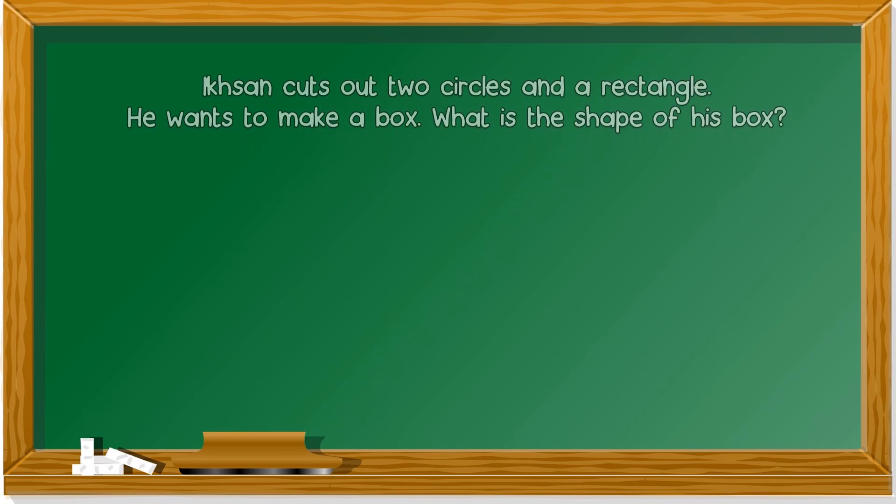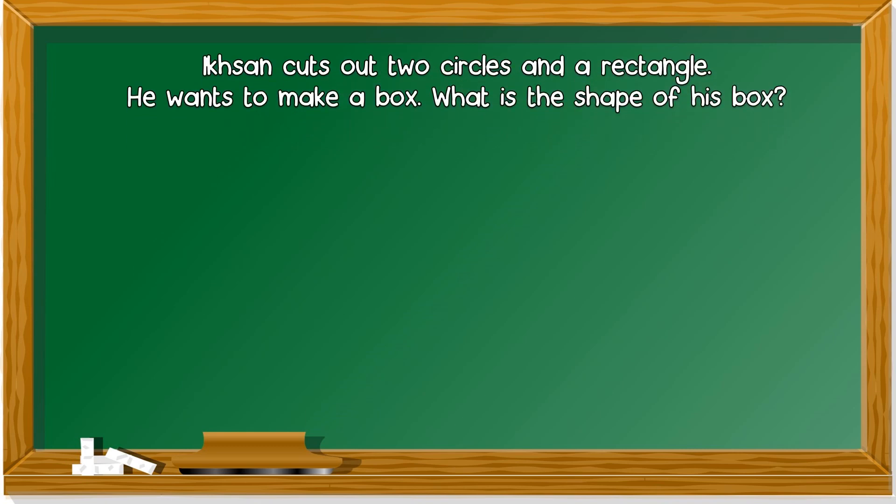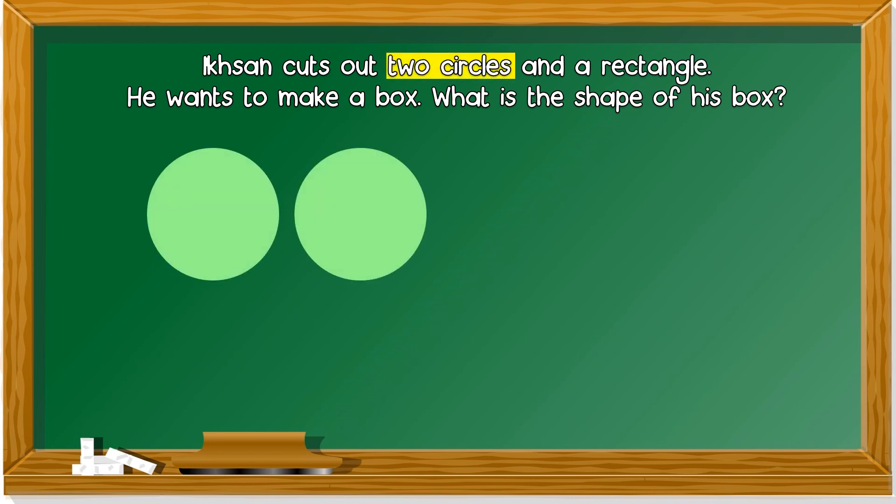Next question. Iksan cuts out 2 circles and a rectangle. He wants to make a box. What is the 3D shape? What is the shape of his box? Here, 2 circles and a rectangle.